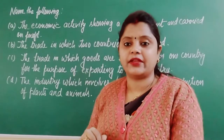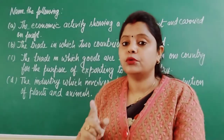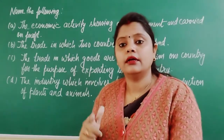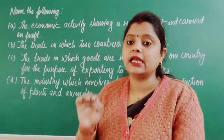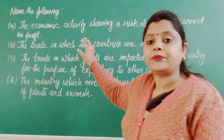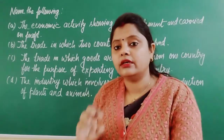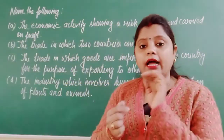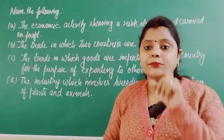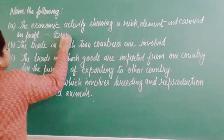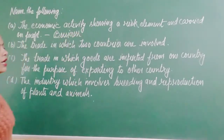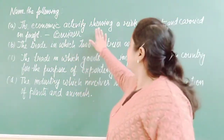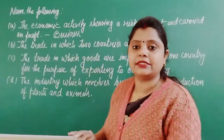Now the second clue: 'carried on for profit.' It is very clear to us that when we do a job we get a salary, when we are in a profession we earn fees, and when we are in business we earn profit. So with the help of the word 'profit' it is very clear that the activity being asked about is business. This is the first situation — the economic activity being conducted here is business.